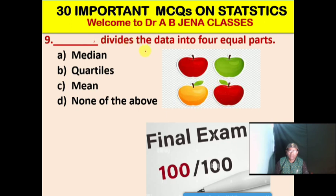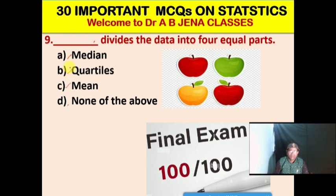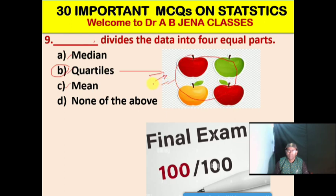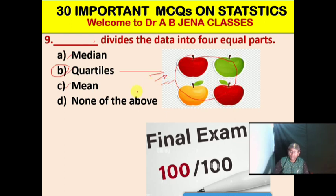Next MCQ: Dash divides the data into four equal parts. A. Median. B. Quartiles. C. Mean. D. None of the above. B is the right option. Quartiles divides the data into four equal parts.